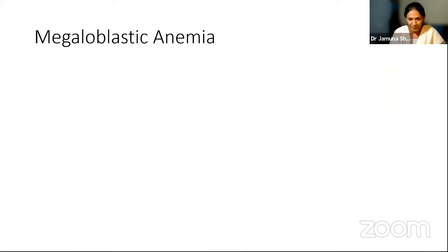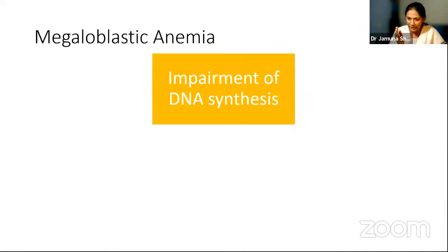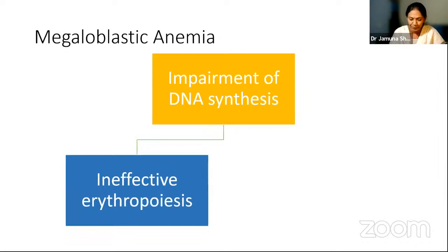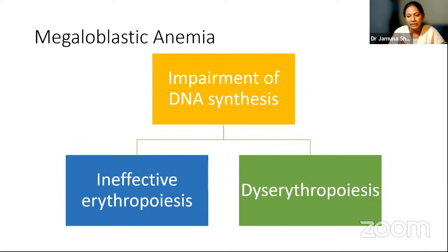In megaloblastic anemia, ultimately what happens is there is impairment in DNA synthesis, making erythropoiesis not only ineffective but also abnormal — which we call diserythropoiesis. The two key elements in megaloblastic anemia are ineffective erythropoiesis and diserythropoiesis. Ineffective means the erythropoiesis is not up to the mark, and the cells that are produced are also abnormal — that is diserythropoiesis.